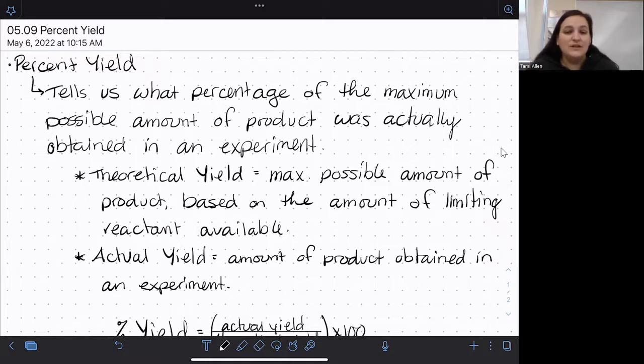We need a few new pieces of terminology. That maximum possible amount of product we refer to as the theoretical yield. So theoretically, based on our calculations of the amount of limiting reactant available, we should be able to produce this amount of product. We call that our theoretical yield.